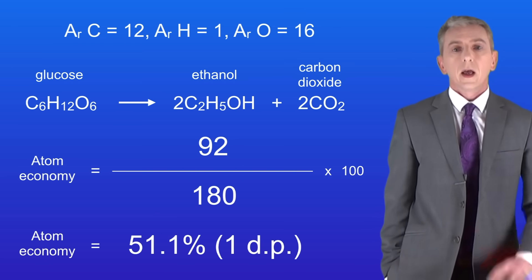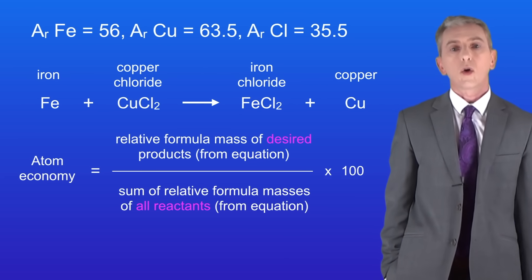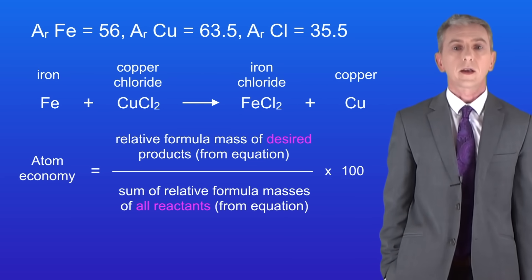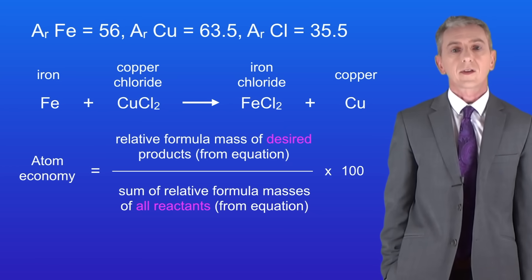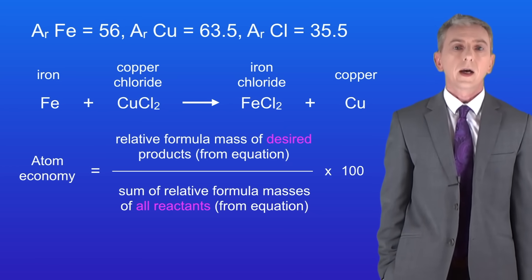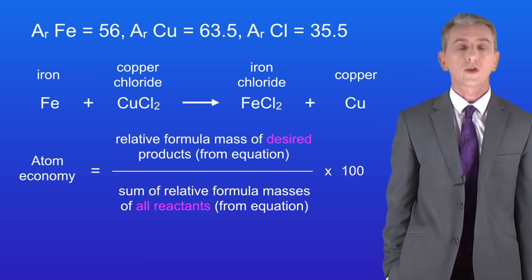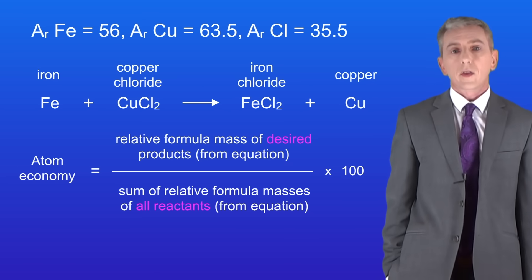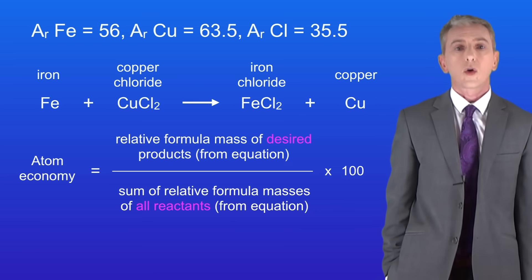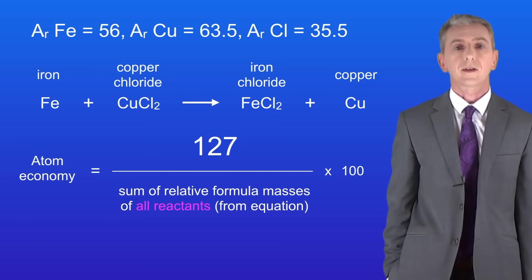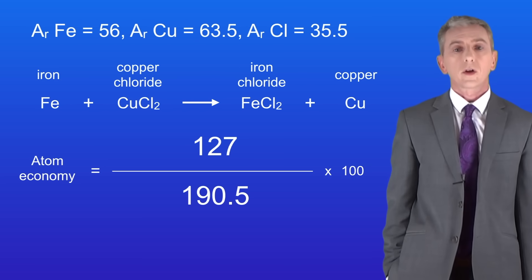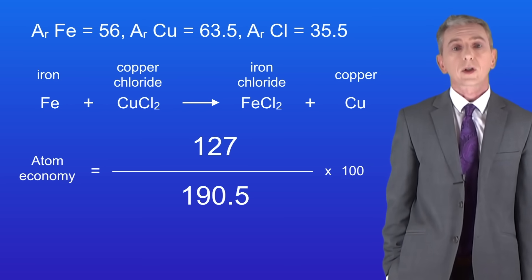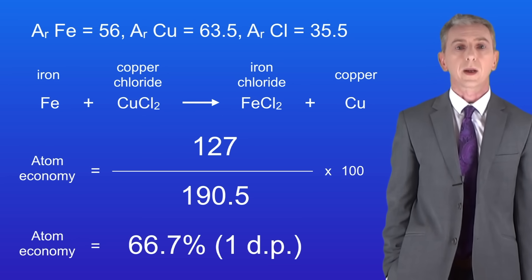Here's another one for you to try. This shows the reaction between iron and copper chloride to make iron chloride and copper. The desired product in this case is iron chloride. I've given you all of the relative atomic masses that you need, so pause the video now and try this yourself. The desired product, iron chloride, has a relative formula mass of 127. Adding the masses of all of the reactants together gives us 190.5. Putting these numbers into the equation gives us an atom economy of 66.7% to one decimal place.